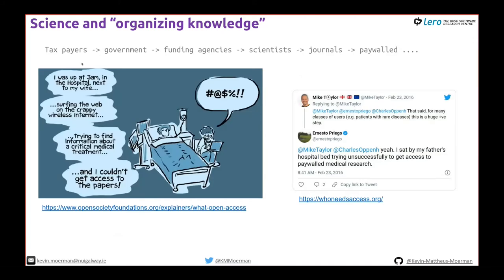It's also not fair. Taxpayers pay the government, the government funds agencies, which fund scientists, and then we throw that money at journals for it to be locked away. There are websites like Open Society Foundations and WhoNeedsAccess.org that collect stories of people who need access to science and couldn't get it. For example: 'I sat by my father's hospital bed trying unsuccessfully to get access to paywalled medical research.'